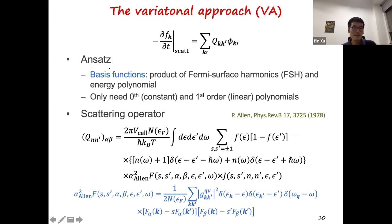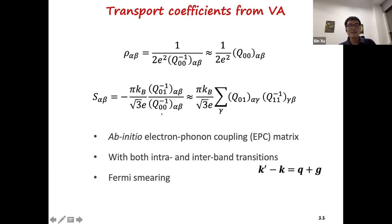With a variational approach, Allen proposed that the basis functions are products of Fermi surface harmonics and energy polynomials, and we only need the zeroth and the first order polynomials to obtain converged transport coefficients. With these new basis functions, the scattering operator, due to the electron-phonon coupling, can be expressed like this, which has contributions from the phonon emission and phonon absorption. The alpha squared F here has a form that is similar to the spectral function for superconductivity, but there's extra weight coming from the Fermi surface harmonics. And the g_kk here is the electron-phonon coupling matrix, can be calculated by the DFPT method.